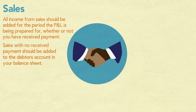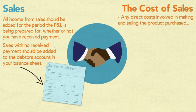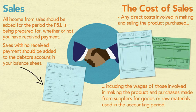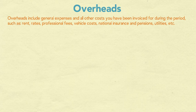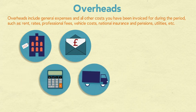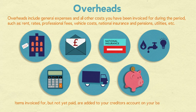Sales with no received payment should be added to the debtors account in your balance sheet. The cost of sales includes any direct costs involved in making and selling the product, including the wages of those involved in making the product and purchases made from suppliers for goods or raw materials used in the accounting period. Overheads include general expenses and all other costs you have been invoiced for during the period, such as rent, rates, professional fees, vehicle costs, national insurance and pensions, utilities, etc. Items invoiced for but not yet paid are added to your creditors account on your balance sheet.